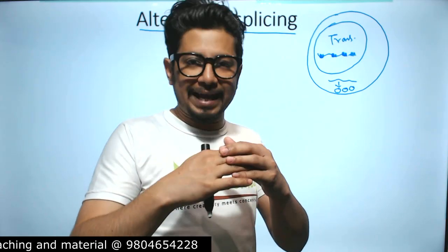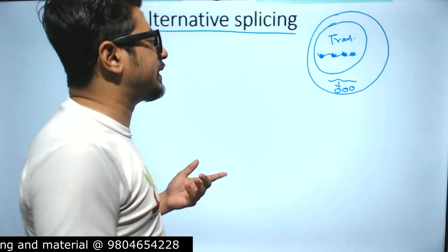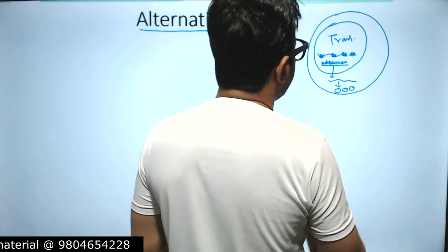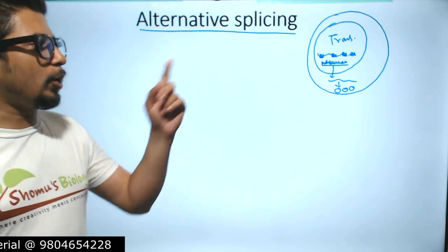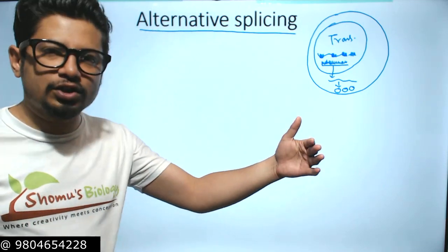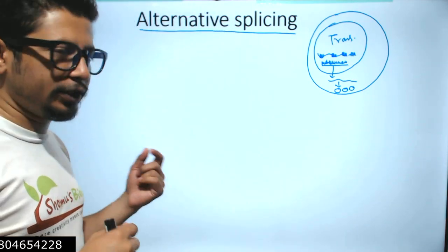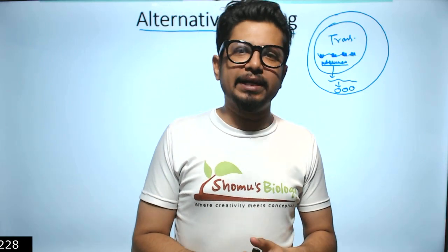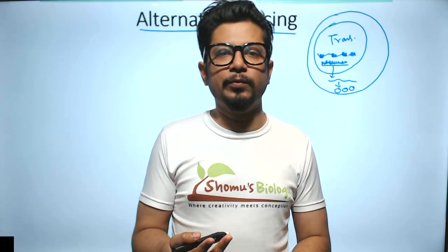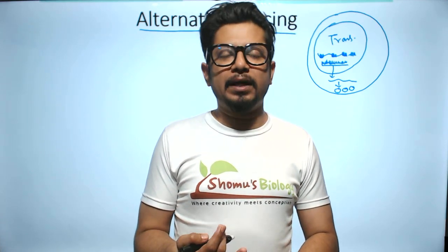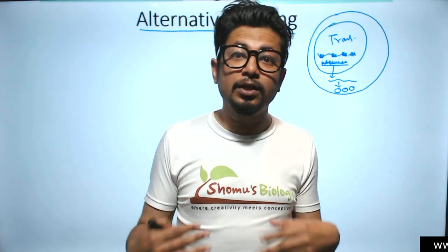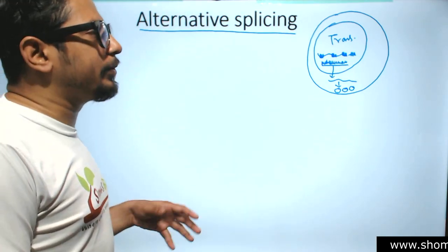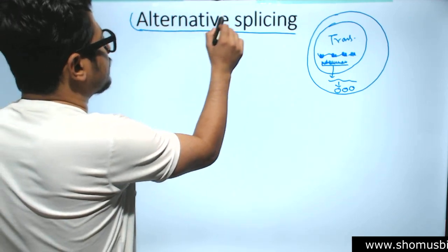In eukaryotes, the pre-mRNA carries more introns than exons. What we need to do is cut out the introns, join the exons together, and make only coding RNA to transfer to the cytoplasm. The process of converting the coding and non-coding stretch of RNA to only a coding stretch is essentially known as splicing, which can be of different types — self-splicing in archaea and bacteria, or spliceosome-mediated splicing in higher eukaryotes.